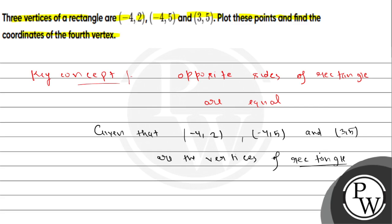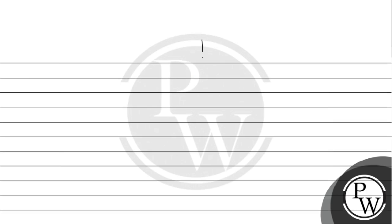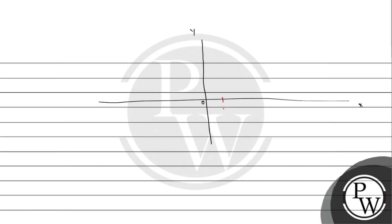In this rectangle, we have to plot it. The coordinate of the rectangle is along the x-axis. We write the origin, and the distances are 1, 2, 3, 4, 5.